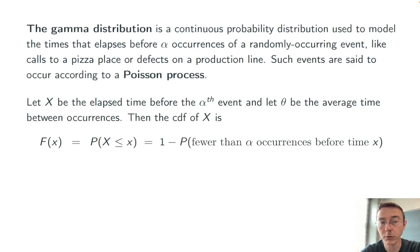Then the cumulative distribution function for that random variable X is one minus the probability of getting fewer than alpha occurrences before time x. And when we're talking about probability for a certain number of occurrences in a fixed amount of time, we're talking about a Poisson distribution.